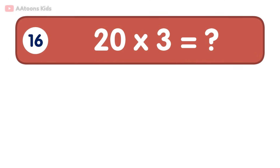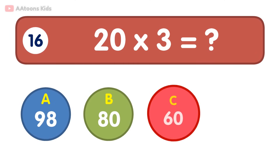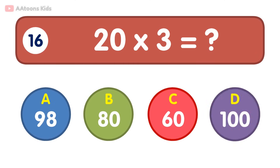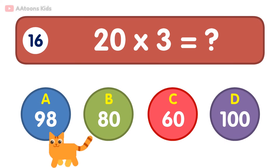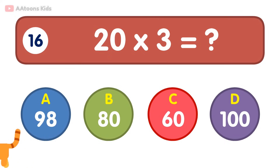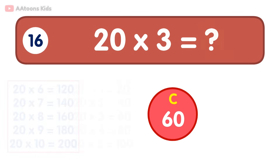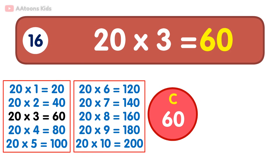20 times 3 is equal to 60. 20 times 3 is 60.